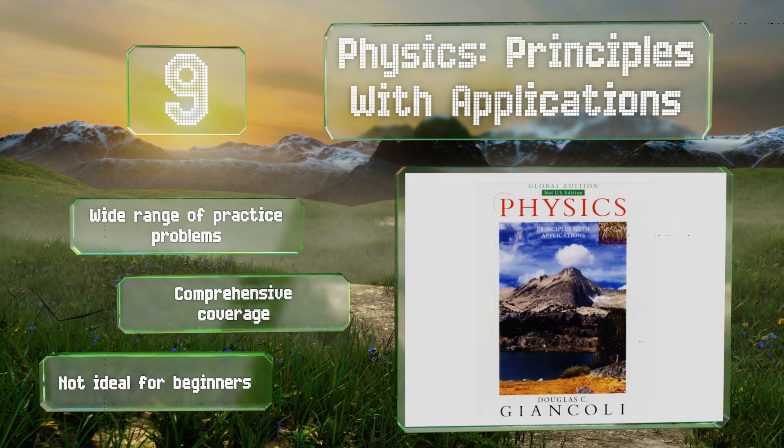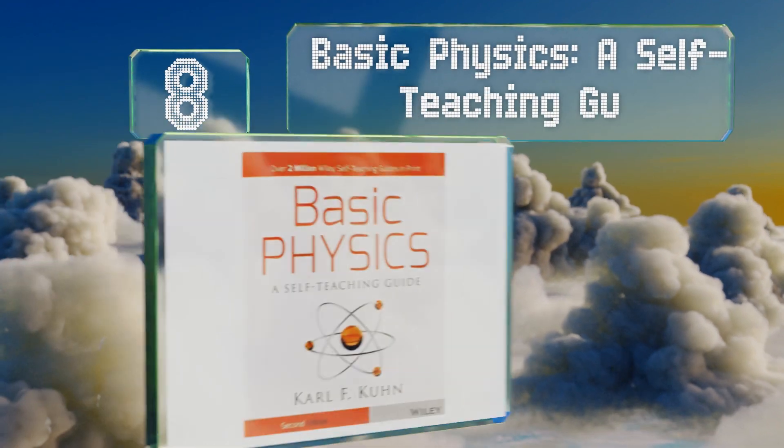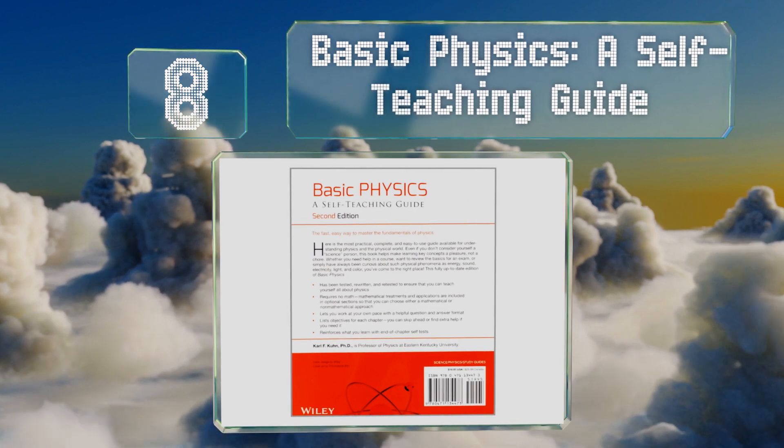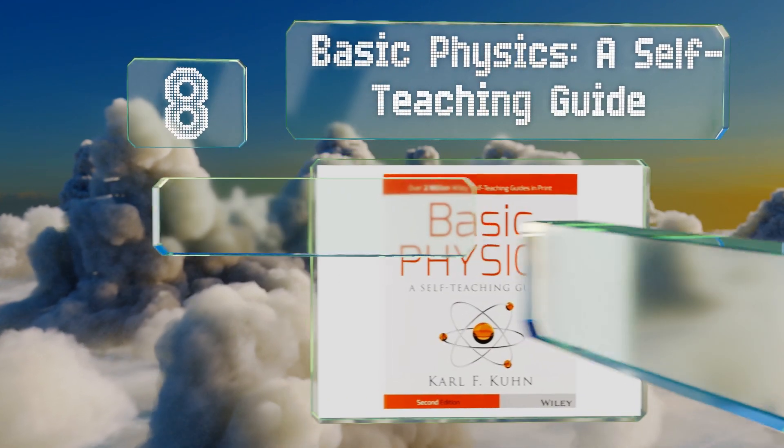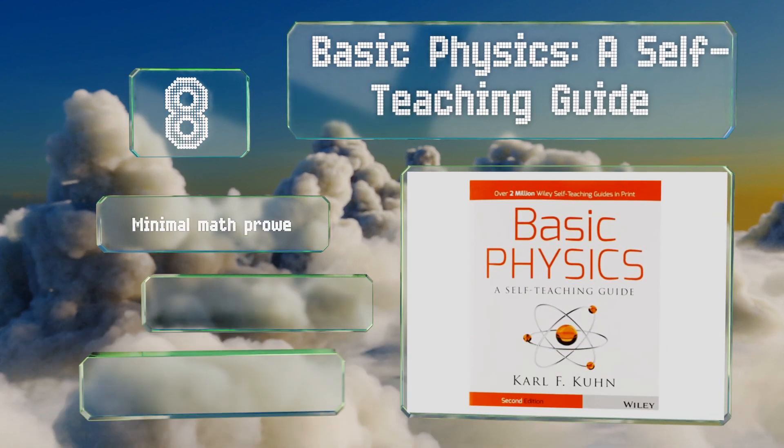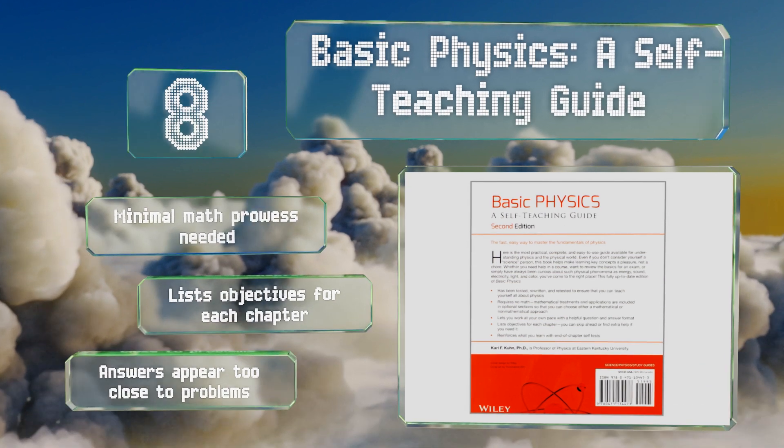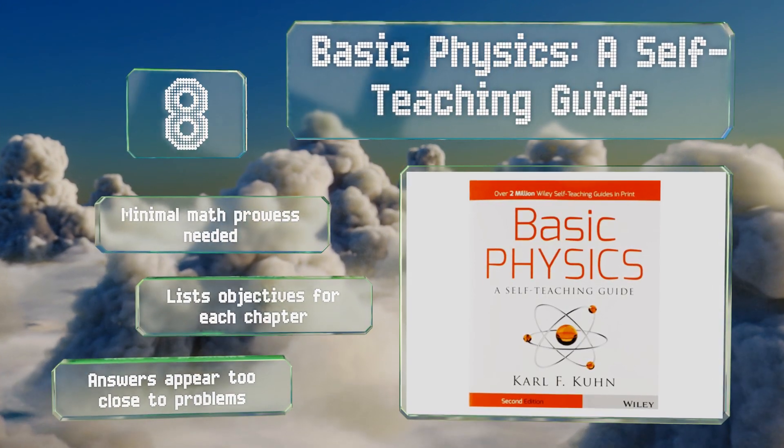Coming in at number eight on our list, the most striking thing about Basic Physics: A Self-Teaching Guide by Karl F. Kuhn has nothing to do with force or gravity, but rather with the fact that it costs so little. This easy-to-read option is a great primer for anyone pursuing advanced studies. Minimal math prowess is needed, and it lists objectives for each chapter. However, the answers appear too close to the problems.